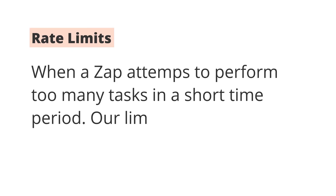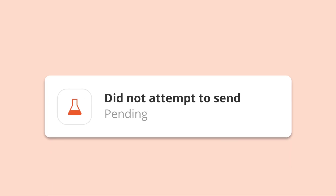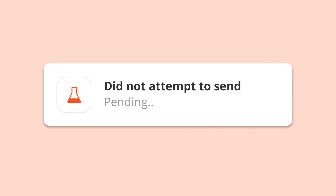And finally, be aware of rate limits. If you're on a free plan, there may be some cases where a Zap attempts to perform too many tasks in too short a time period. Zapier, or another app, may limit or throttle it. Our limit is 200 attempts every 10-minute window per Zap. If your Zap is throttled, you'll get an error message, and if it's Zapier doing the throttling, our name will show up on that message.